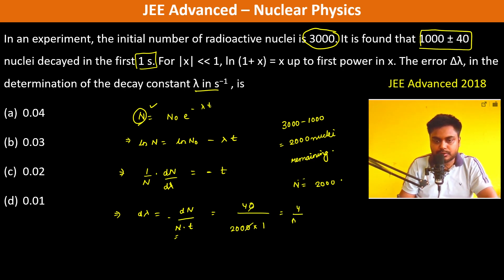which is 40/2000 = 4/200 = 2/100 = 0.02. So 0.02 is the answer.